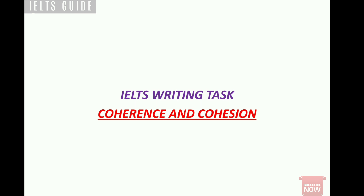We're covering writing task coherence and cohesion. As you know, writing task is judged by four things: task achievement, coherence and cohesion, grammatical range and accuracy, and lexical resource. I have already uploaded videos on task achievement and grammatical range and accuracy. This is the third video in the series, about coherence and cohesion, with lexical resource coming next.